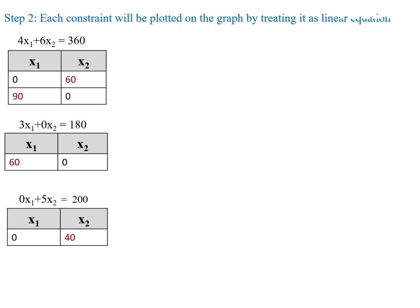The third constraint equation is 0x1 plus 5x2 equal to 200, which simplifies to 5x2 equal to 200, so x2 equal to 40. The coordinates for this constraint are (0, 40). Next, we plot these coordinates on the graph.